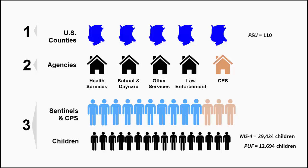Data were unduplicated and non-maltreated children were removed from the Public Use File (PUF) distributed by NDACAN. The NIS-4 data has 29,424 child cases. The PUF contains 12,694 cases of countable maltreated children. Analyses are done using weights to make the data set nationally representative.